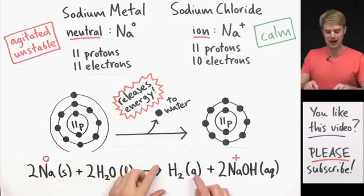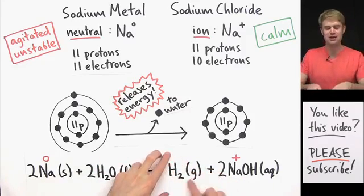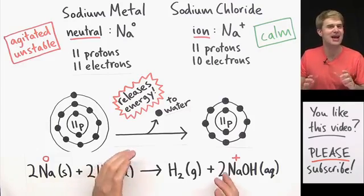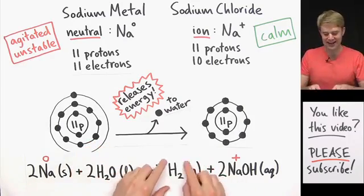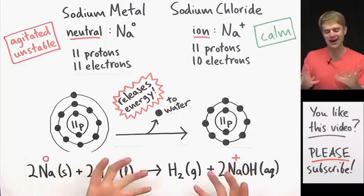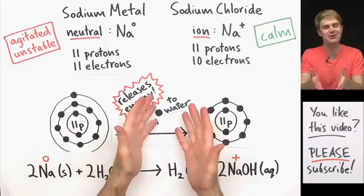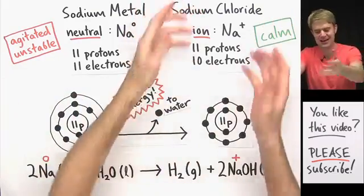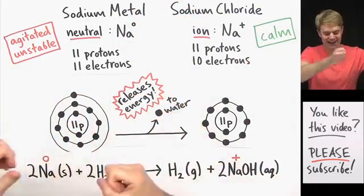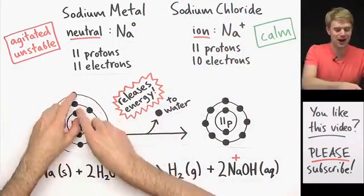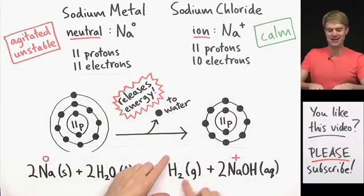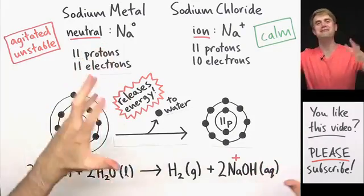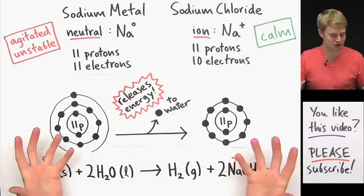The other thing that happens is hydrogen gas gets released. Hydrogen gas is super explosive, it is super flammable, and it is quickly lit on fire by all of the heat energy that's being released when this electron gets given to water. Because this is a highly energetic process where lots of heat energy is released, and it sets the H2, the hydrogen gas, on fire. This is what causes the flames and the popping and the explosion.